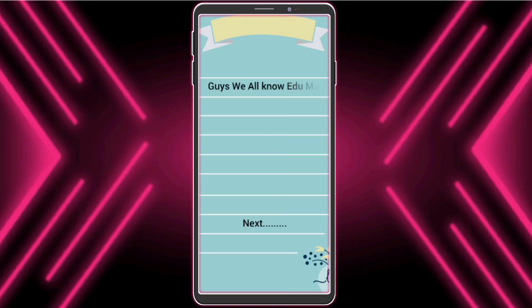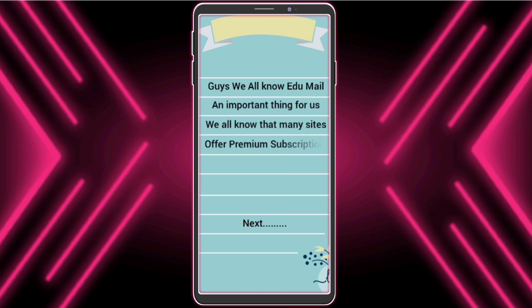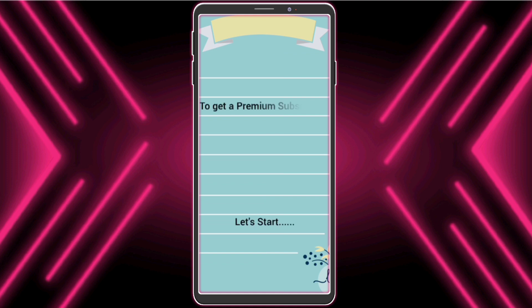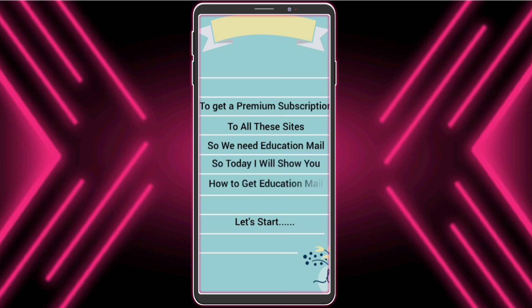Guys, we all know that education mail is an important thing for us. Many sites offer premium subscriptions free for students — for example, GitHub, Microsoft Azure, Grammarly, Amazon, Name.com, etc. To get a premium subscription to all these sites, we need an education mail. So today I will show you how to get an education mail. Let's start.